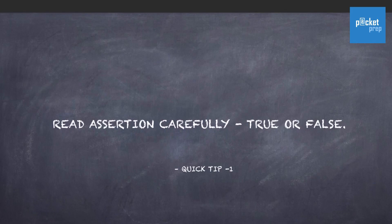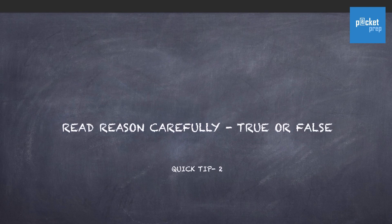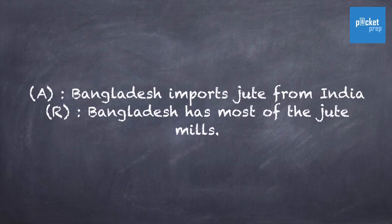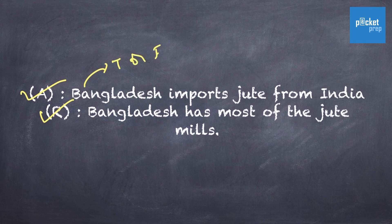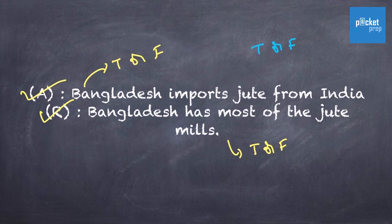Before solving, let's understand a few smart tips. Tip number one: read the assertion carefully and identify whether it is true or false. Tip two: read the reason carefully and identify whether it is true or false. You need to consider both Assertion and Reason as two independent statements and check for their validity. Consider the assertion as an independent statement and find out whether it is true or false. Similarly, take the reason and identify whether it is true or false. In order to judge a statement as true or false, it is necessary to have general knowledge on different topics.